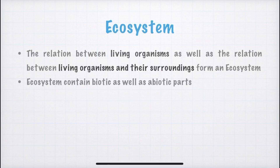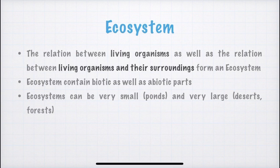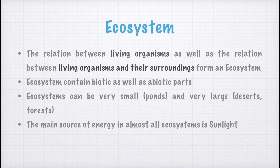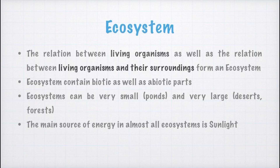Ecosystem may contain biotic parts — for example, animals and plants — and abiotic parts — for example, temperature and humidity. Also, an ecosystem can be very small like a pond or very large such as a river or forest. To keep an ecosystem intact, we need energy. The basic source of energy in almost all ecosystems is sunlight. For example, in a forest, plants do photosynthesis and produce food using sunlight. These plants are eaten by herbivores such as deer, and these herbivores are then eaten by animals like lions and tigers — they are all dependent on each other and on their surroundings, and this is nothing but an ecosystem.